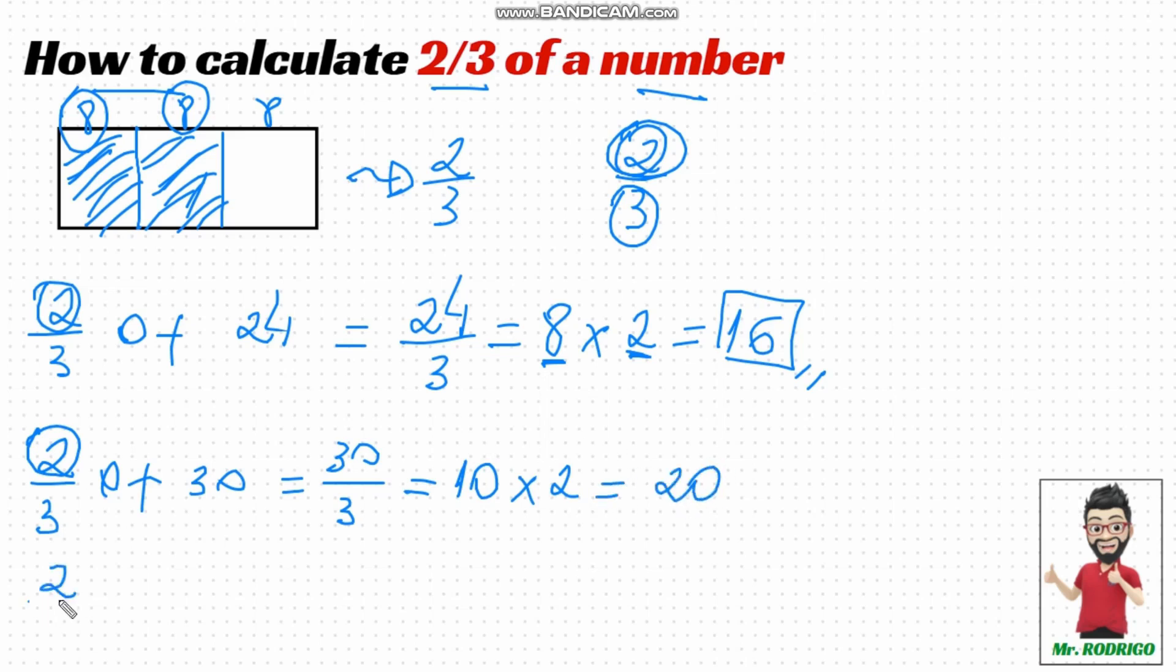What is two-thirds of eighteen? First step, I take eighteen and divide it into three equal parts. Eighteen divided by three equals six. Then, multiply that amount by two, because I want two of that amount. Six times two is twelve. So, two-thirds of eighteen is twelve.